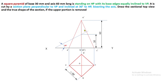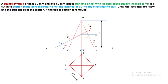Now we can complete the section plane. The representation of the section plane is a dot-and-small-dash line at both ends with continuous thick lines. The upper portion is removed, so that part has to be removed. The remaining portion is converted into continuous thick lines.